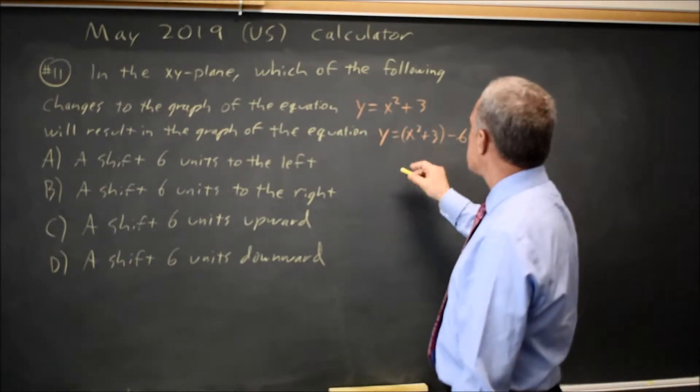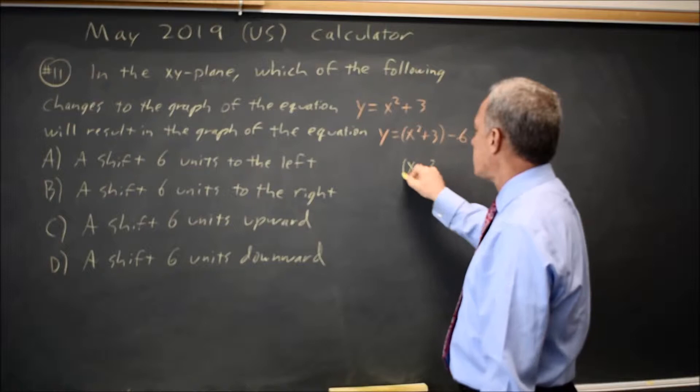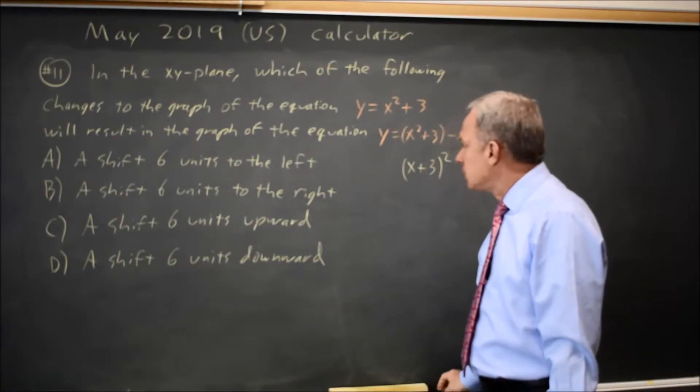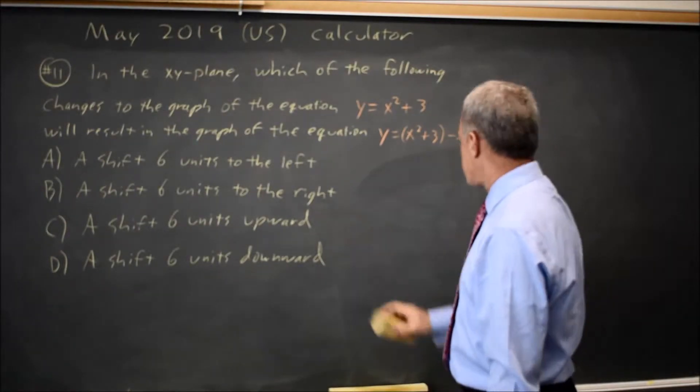Read this carefully. This is not the same as X plus 3, that quantity squared, which is what we expect to see as a more common vertex form.